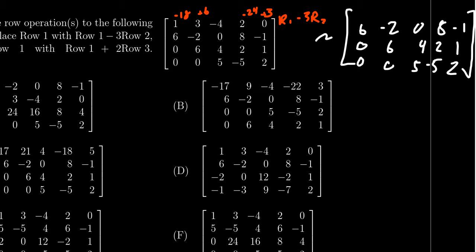And so for the first row, you're going to get 1 minus 18, which is negative 17. You're going to get 3 plus 6, which is 9. You're going to get negative 4, because you add 0 to it. You're going to get 2 minus 24, which is negative 22. And then lastly, you're going to get 0 plus 3, which is 3.